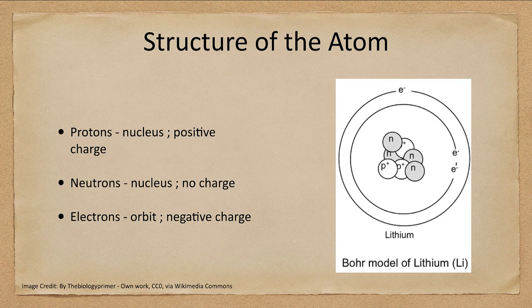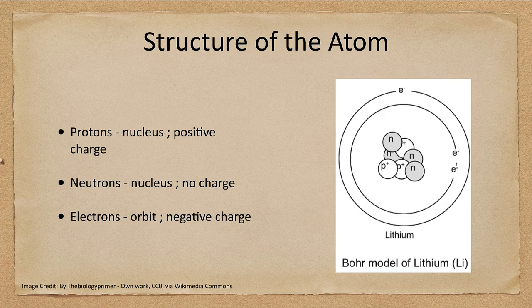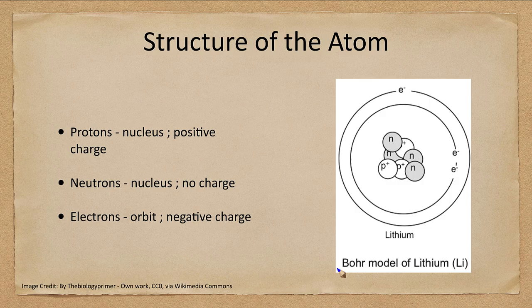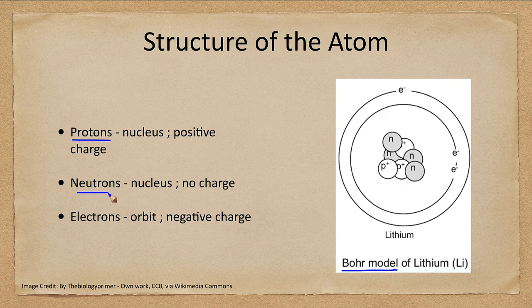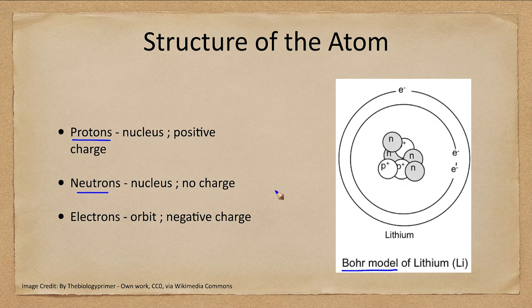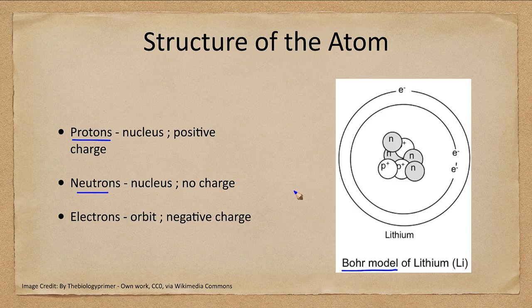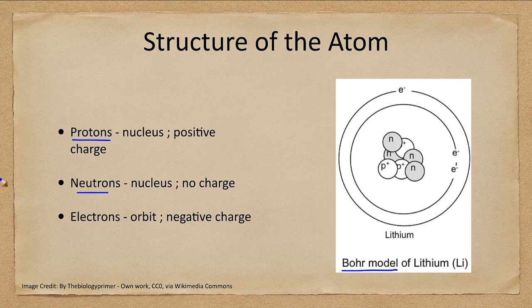So first we want to look at how the atom is set up. An atom is set up with a nucleus and electrons orbiting around it. Now this is a simplified version, what we call the Bohr model of the atom, and that has the nucleus with protons and neutrons. Protons being positively charged, neutrons having no charge, and those are concentrated in the nucleus. The other ones are the electrons that actually orbit around the atom. And here we see the structure of lithium.